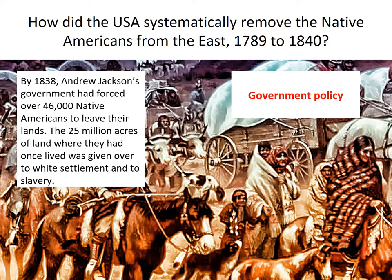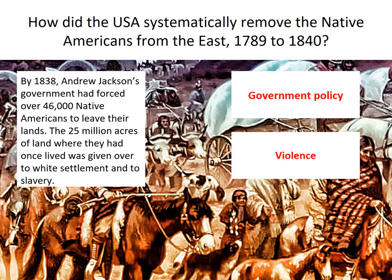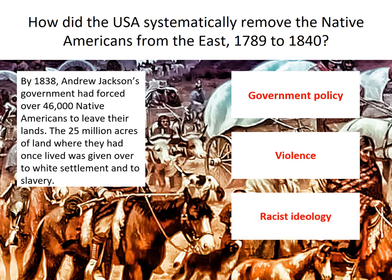The second way was through violence — whether that was defeating the Native Americans in war or forcing them on marches like the Trail of Tears. The third and final element was a racist ideology: the US systematically removed the Native Americans because they saw them as lesser beings and believed they had a right to their land. That racist ideology led them to create government policy and resort to violence, and unfortunately by around 1840 the Native Americans had been removed from the east.